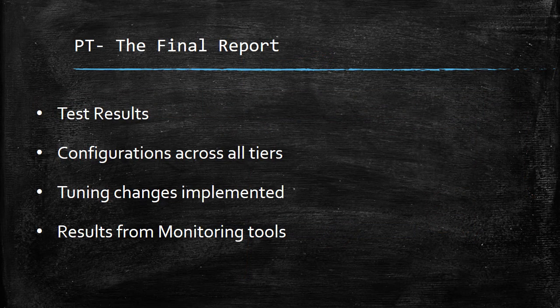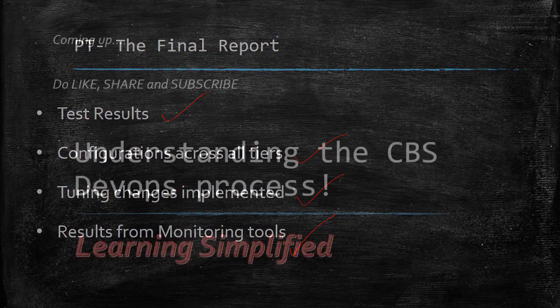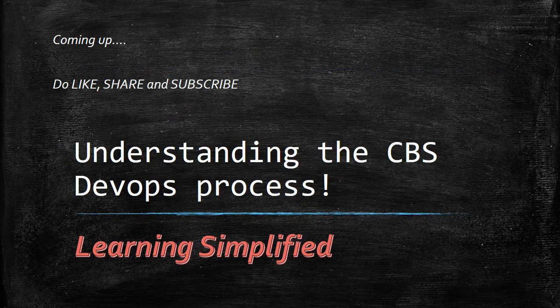The test reports will cover the test results, the configurations implemented across the application, database, and middleware, and any unique changes made — since these will ultimately need to be implemented in the production environment. All monitoring evidence is showcased in the report. This gives a good understanding of how core banking load testing works.